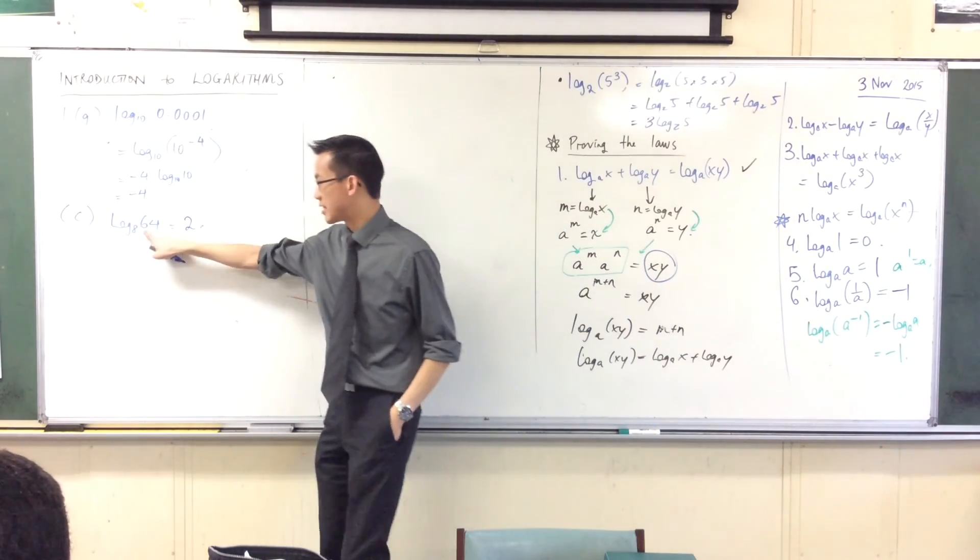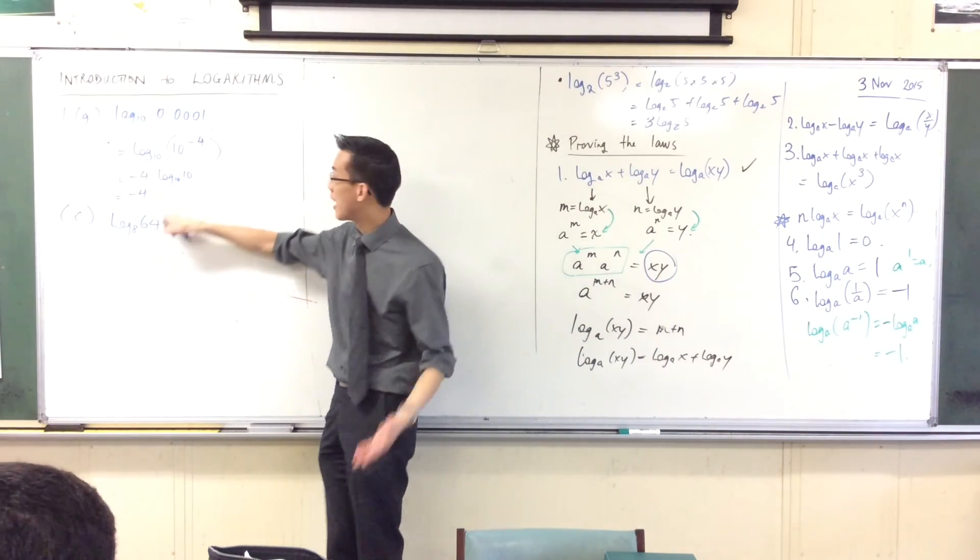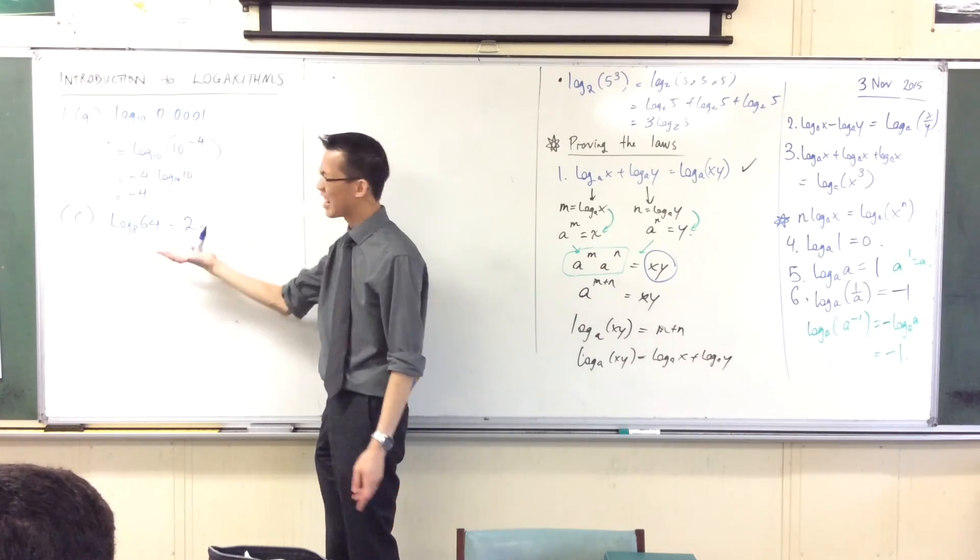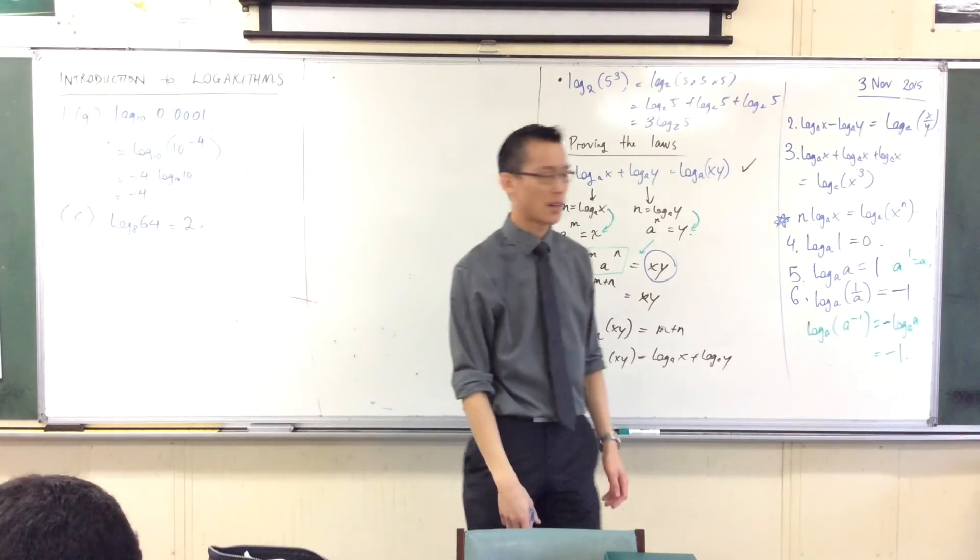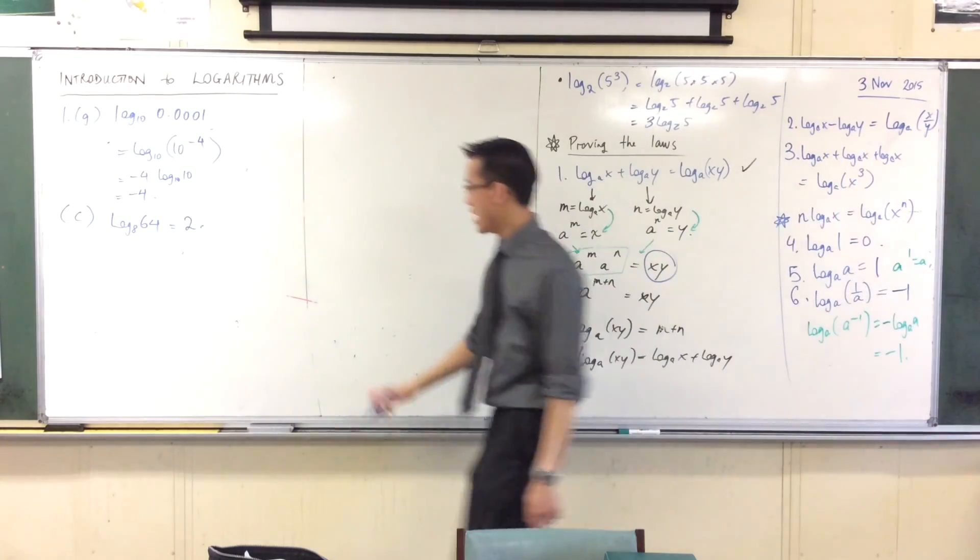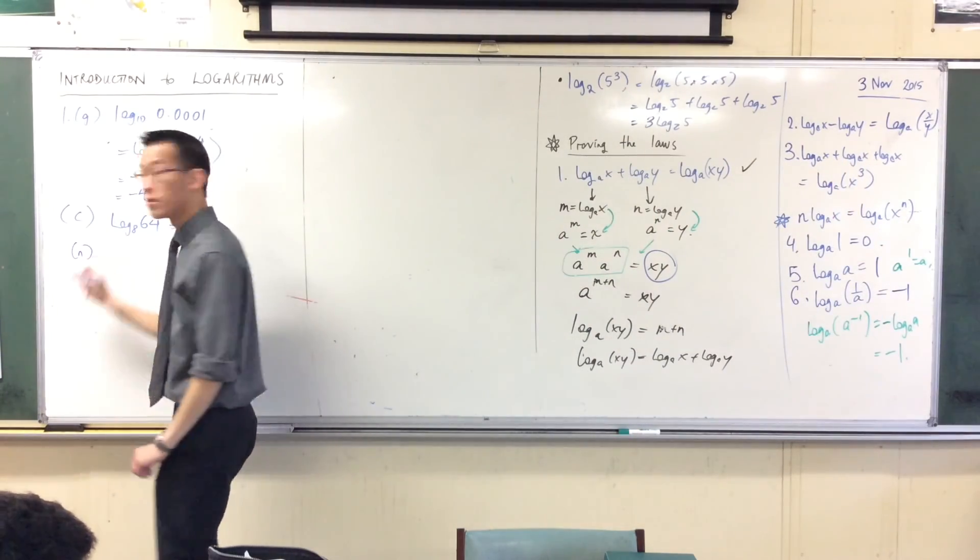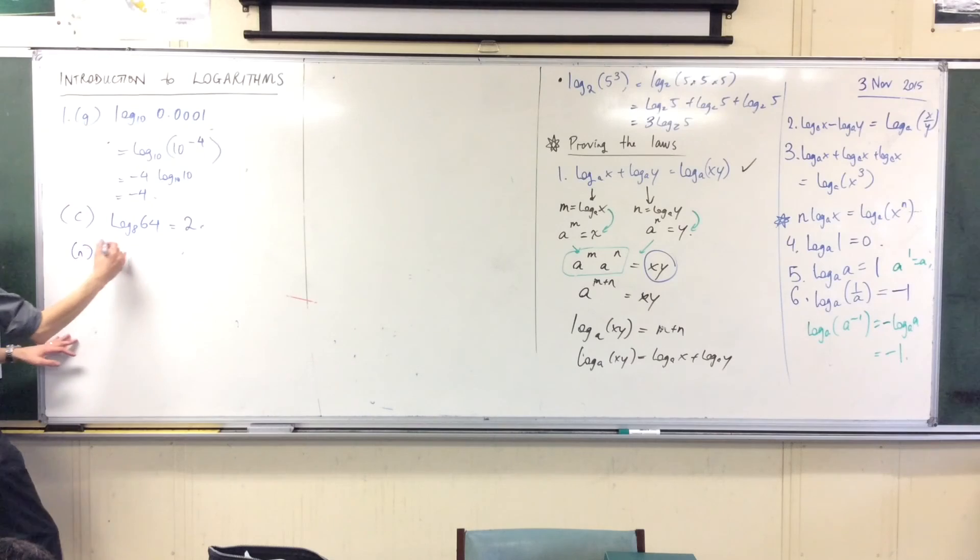If I wanted to, I could write 64 as 8 squared, and then I could do the same trick that I did up here, but I kind of don't need to because the numbers are simple enough. Alright, let's do one more. Let's do N. N looks like a bit of a disaster, but it's okay.